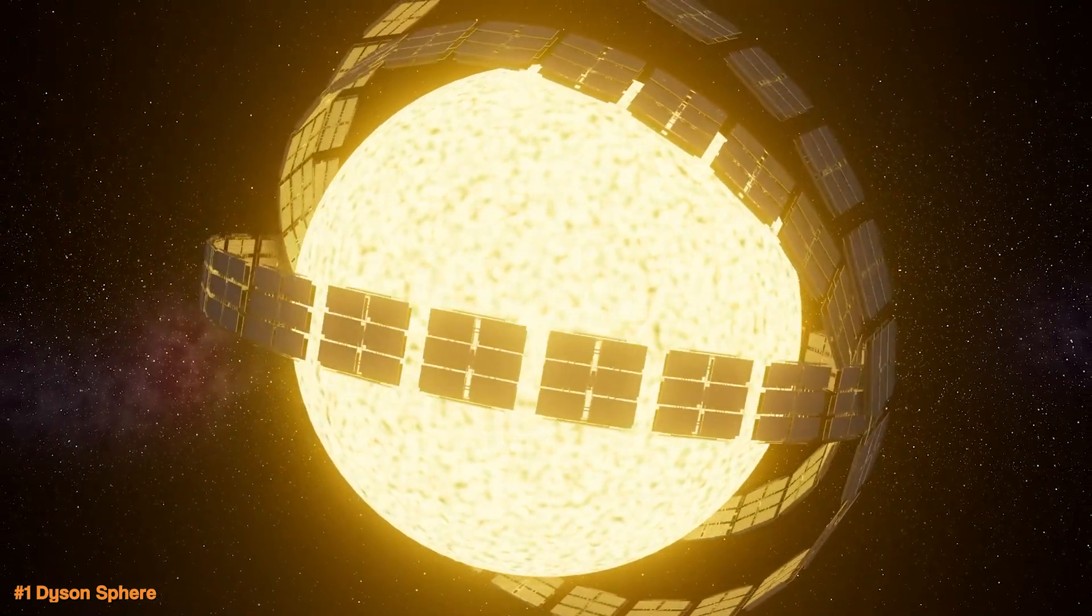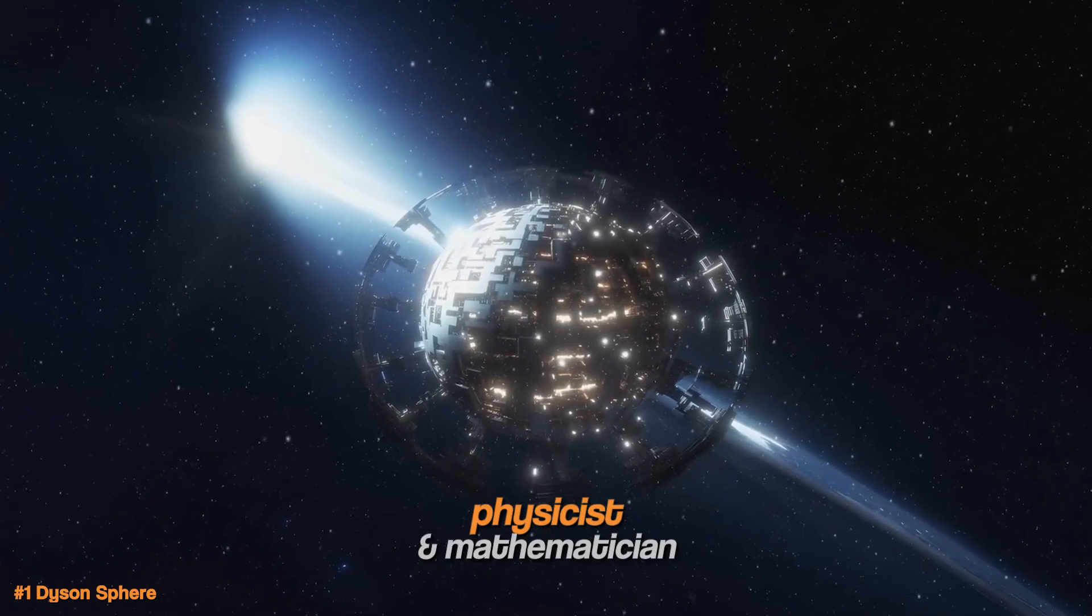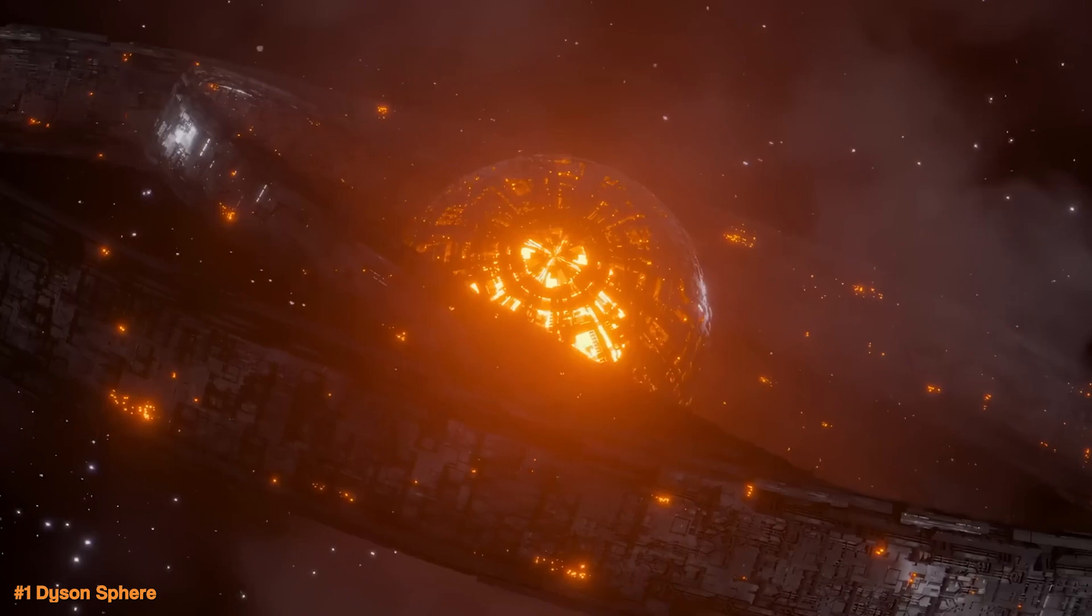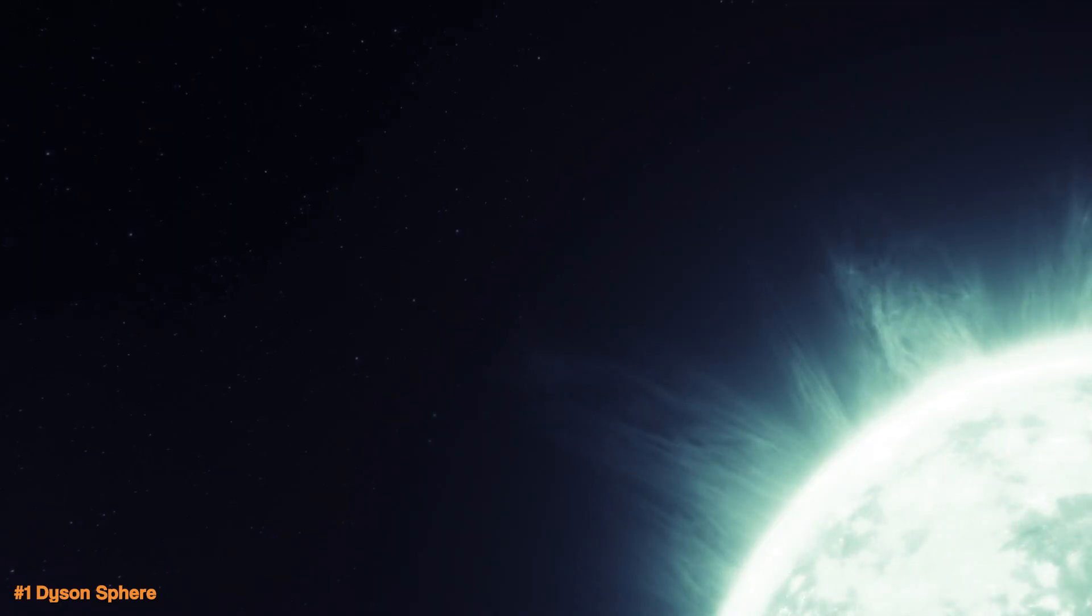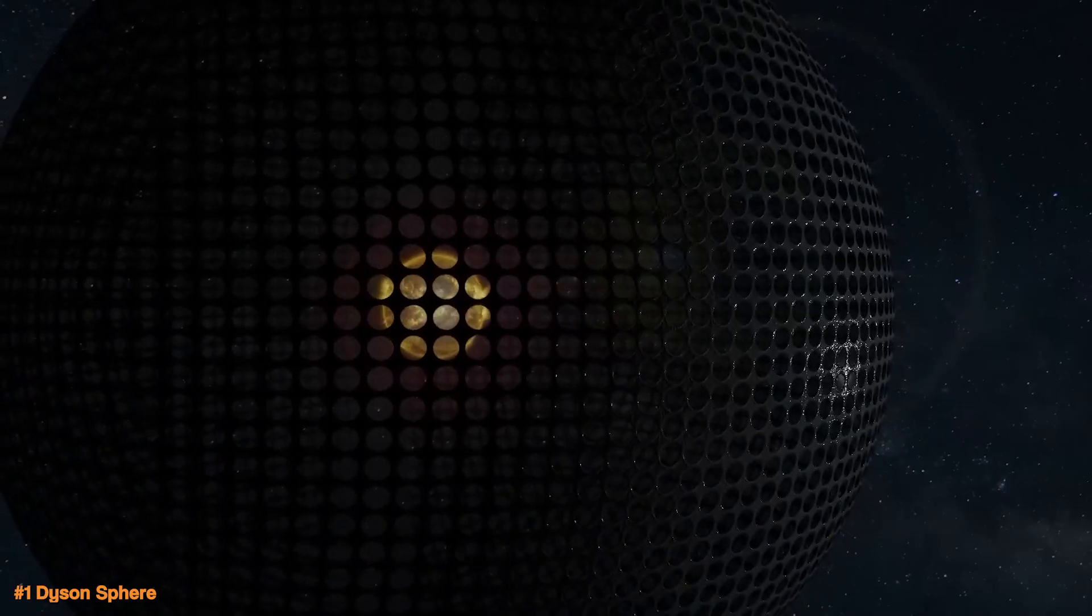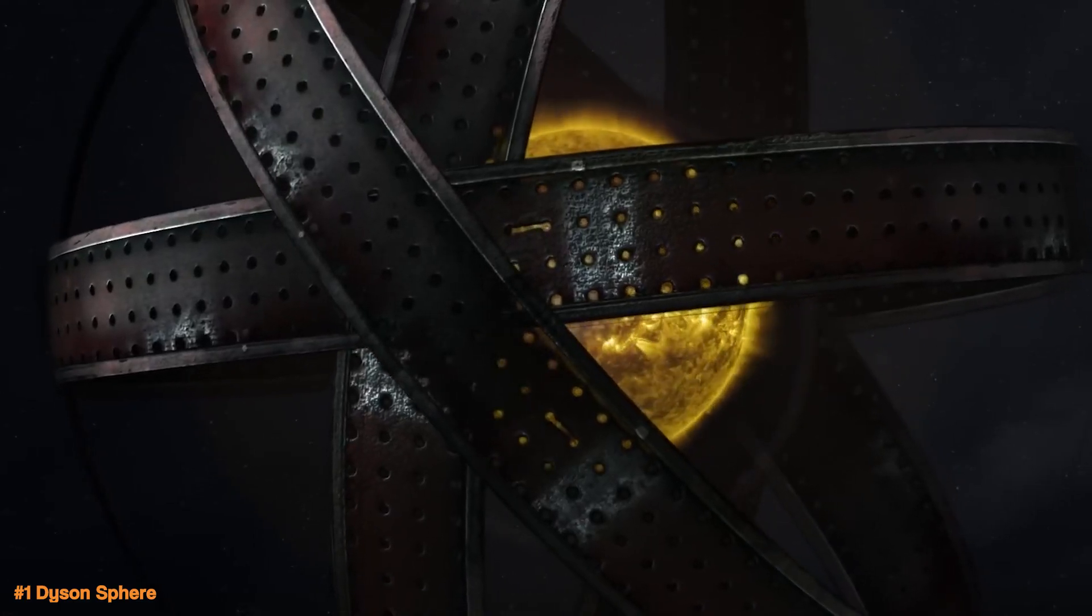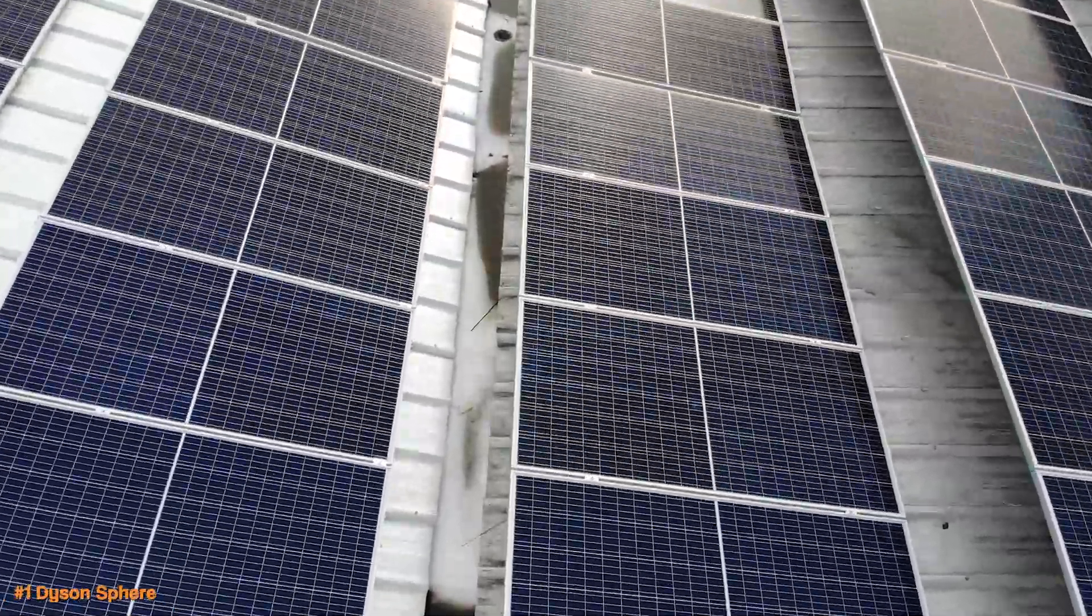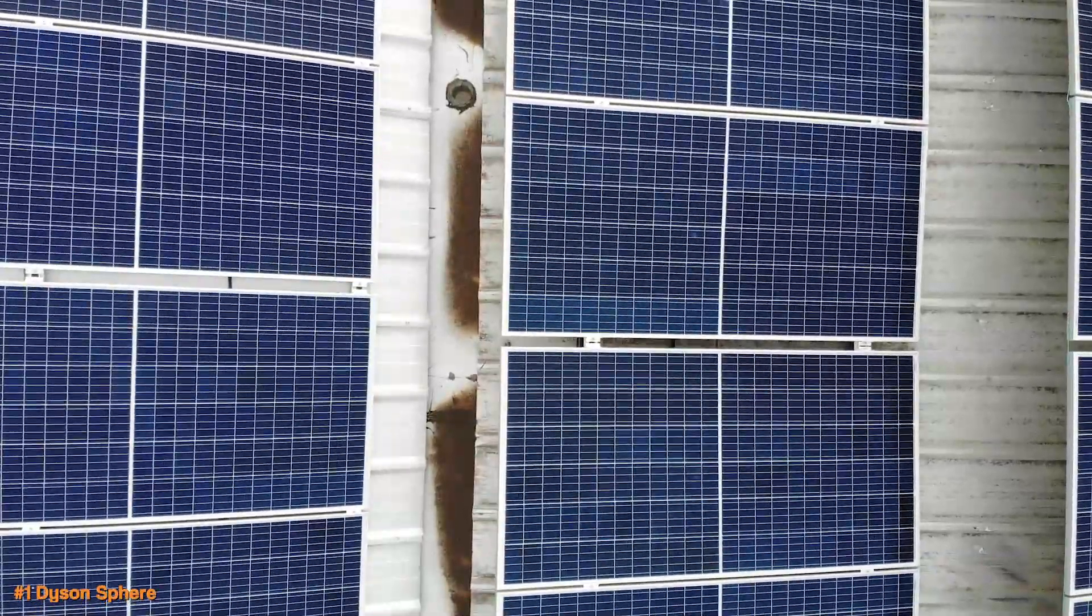A Dyson sphere is a theoretical megastructure proposed by physicist and mathematician Freeman Dyson in 1960. It represents a way for an advanced civilization to harness the total energy output of a star to meet its energy needs. A Dyson sphere is a structure that surrounds a star, capturing most or all of its energy output. It works because solar panels or similar devices collect the energy radiated by the star, converting it into usable power.